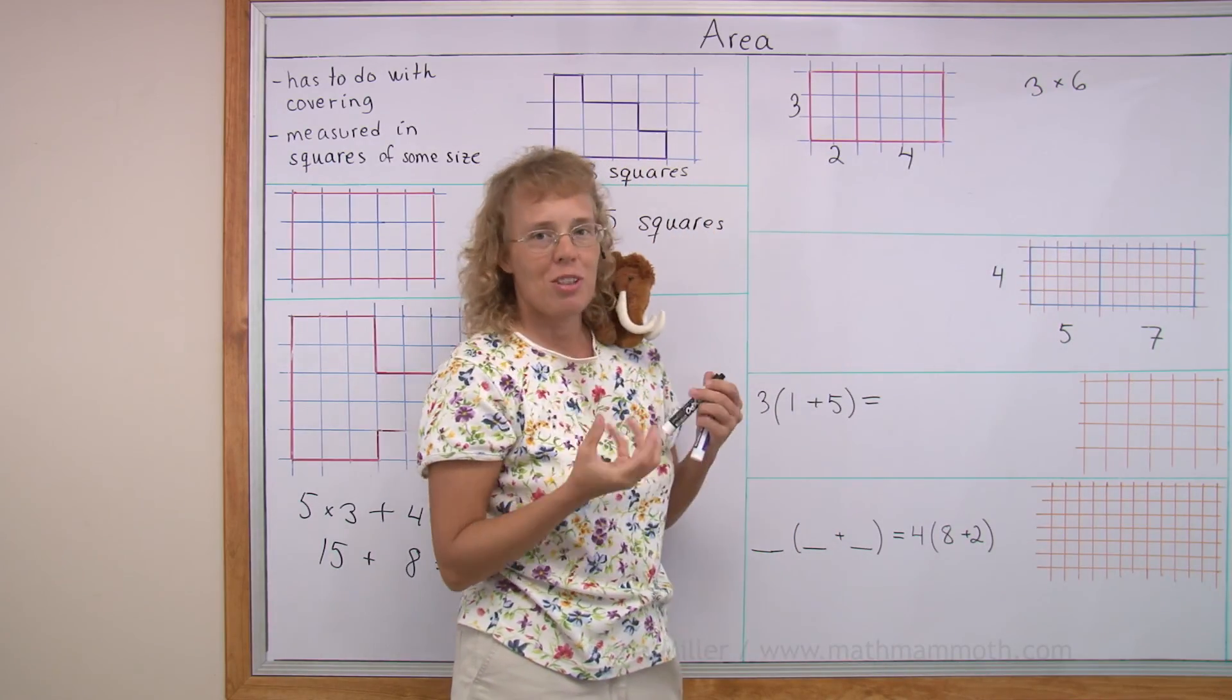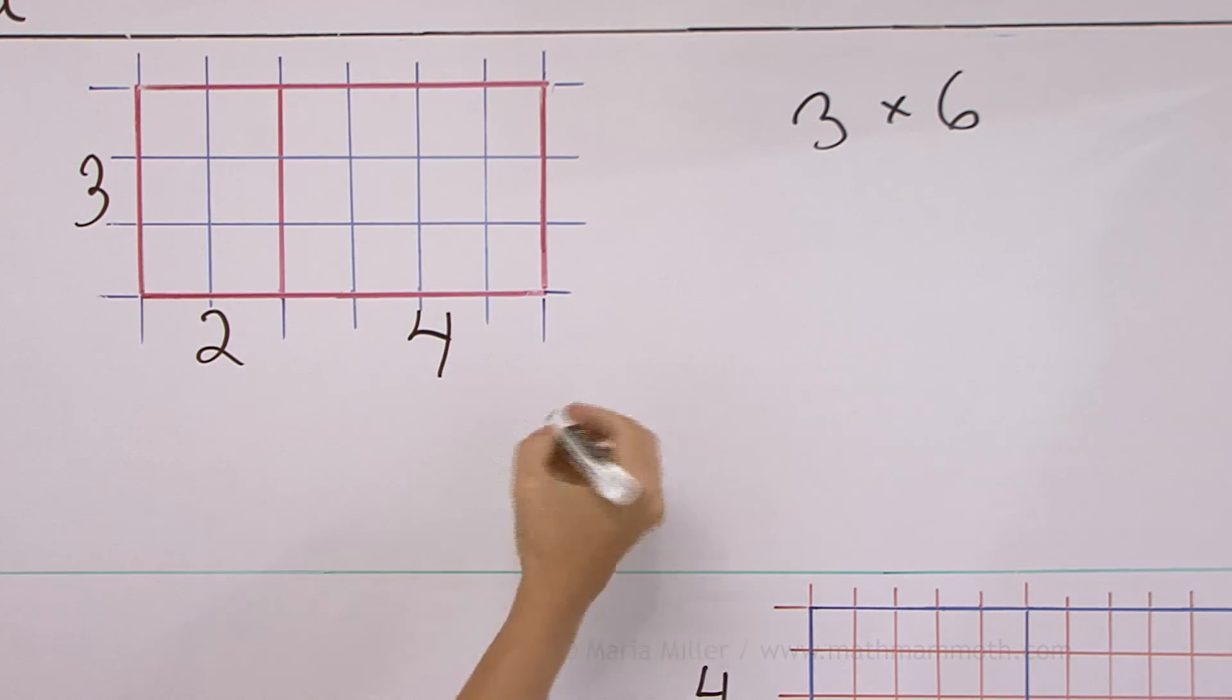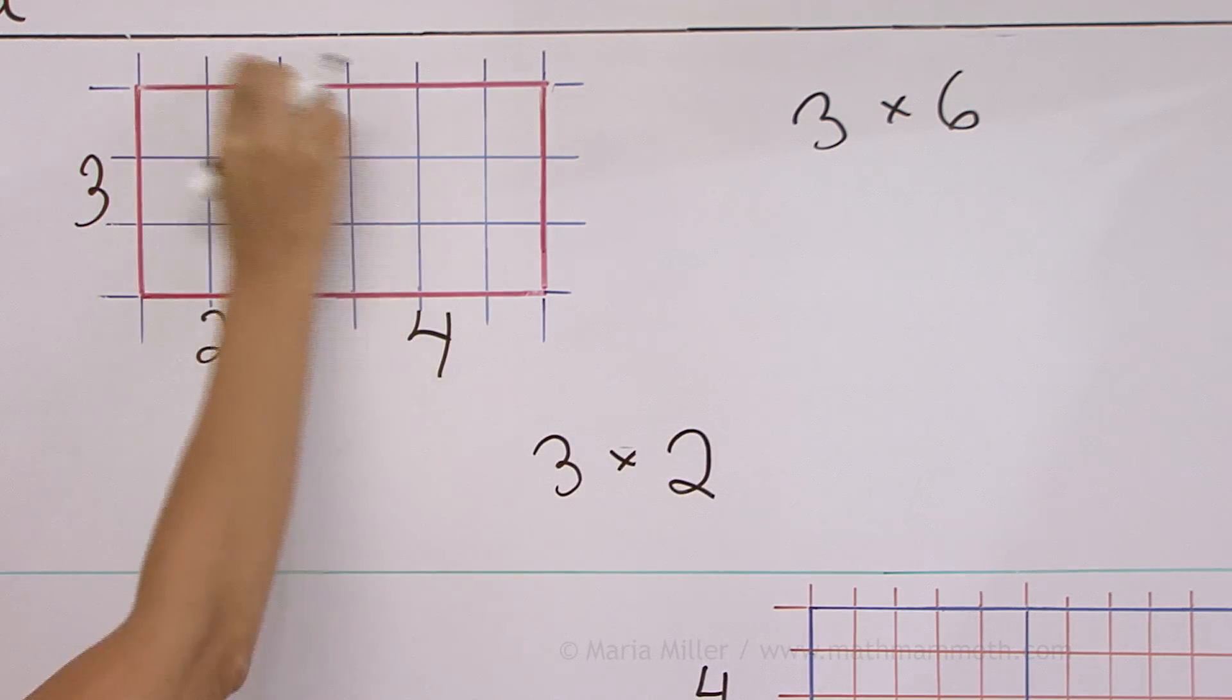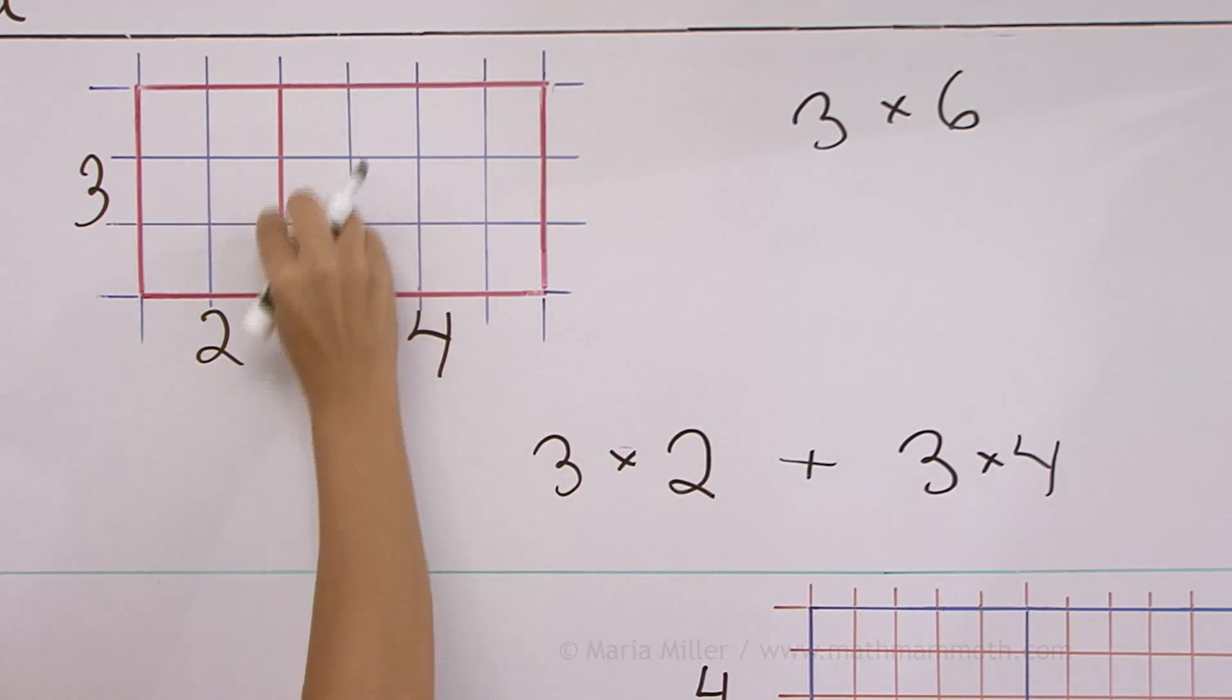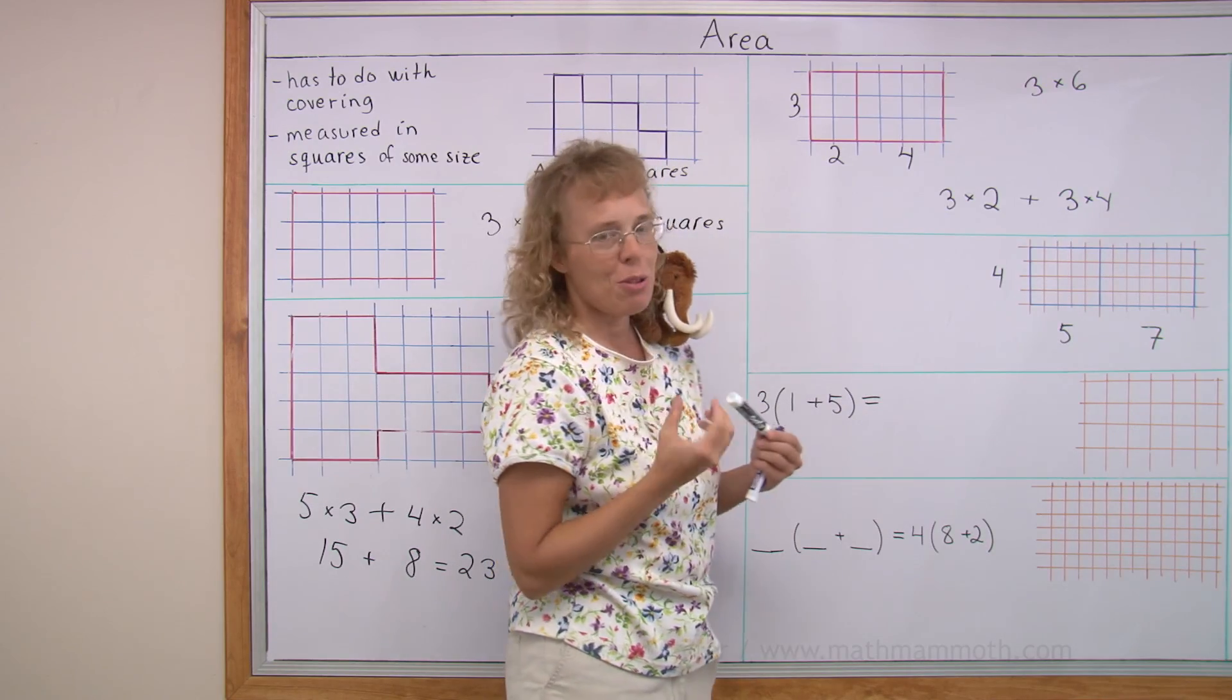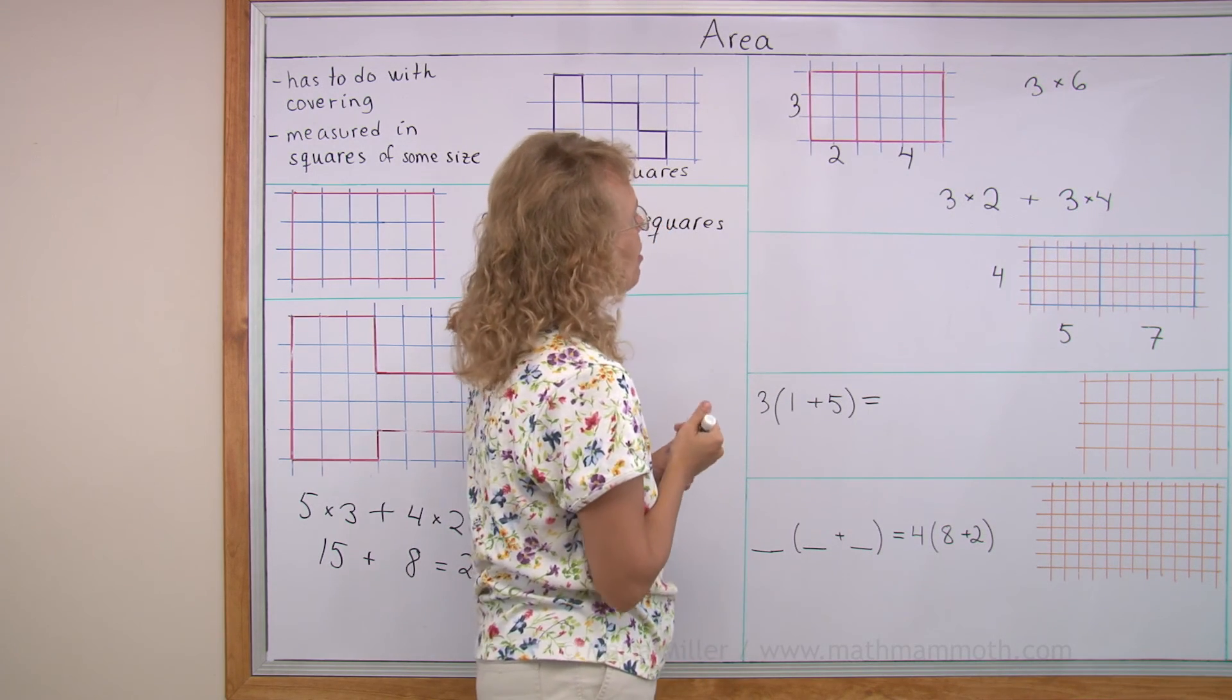So I could think of it as 3 times 6 rectangle. But I can also think of those two parts. There's a rectangle here and a rectangle here. So I could write it as 3 times 2, which is this rectangle. And then add to that 3 times 4. Right? 3 units here. 4 here. 3 times 4. Of course, either way we will get 18 square units.